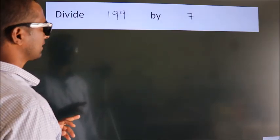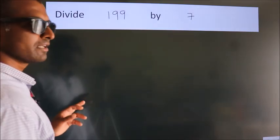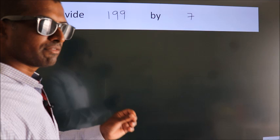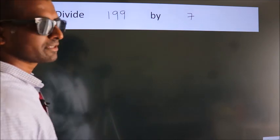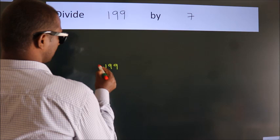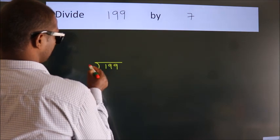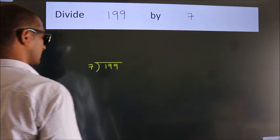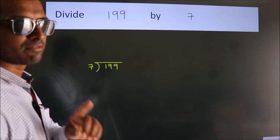Divide 199 by 7. To do this division we should frame it in this way. 199 here, 7 here. This is your step 1.